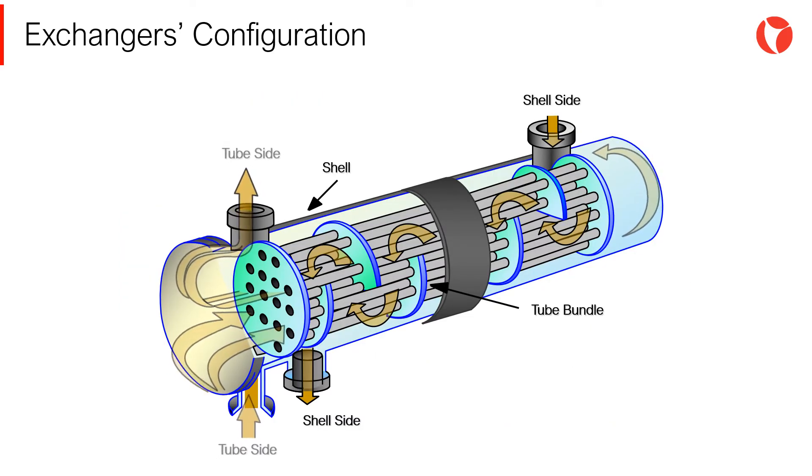The fluid flowing inside the heat transfer tubes, that belongs to the tube bundle, defines the tube side of a shell and tube heat exchanger. On the contrary, the fluid flowing inside the shell of the exchanger defines the shell side of a shell and tube heat exchanger.